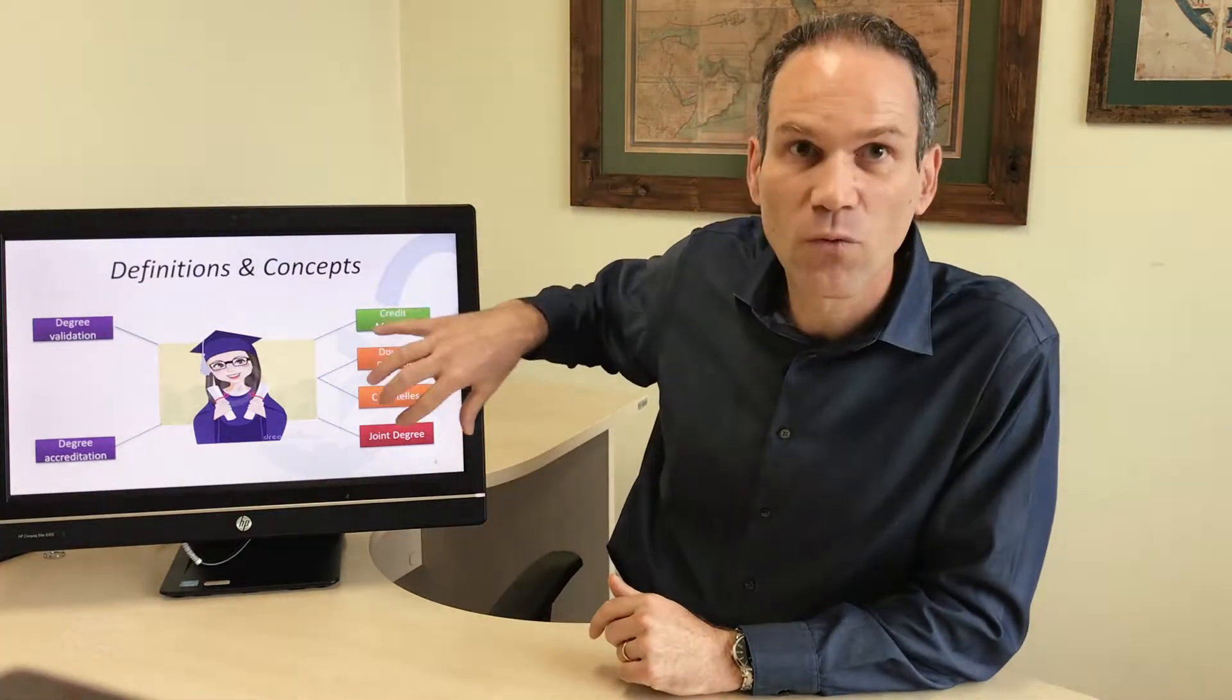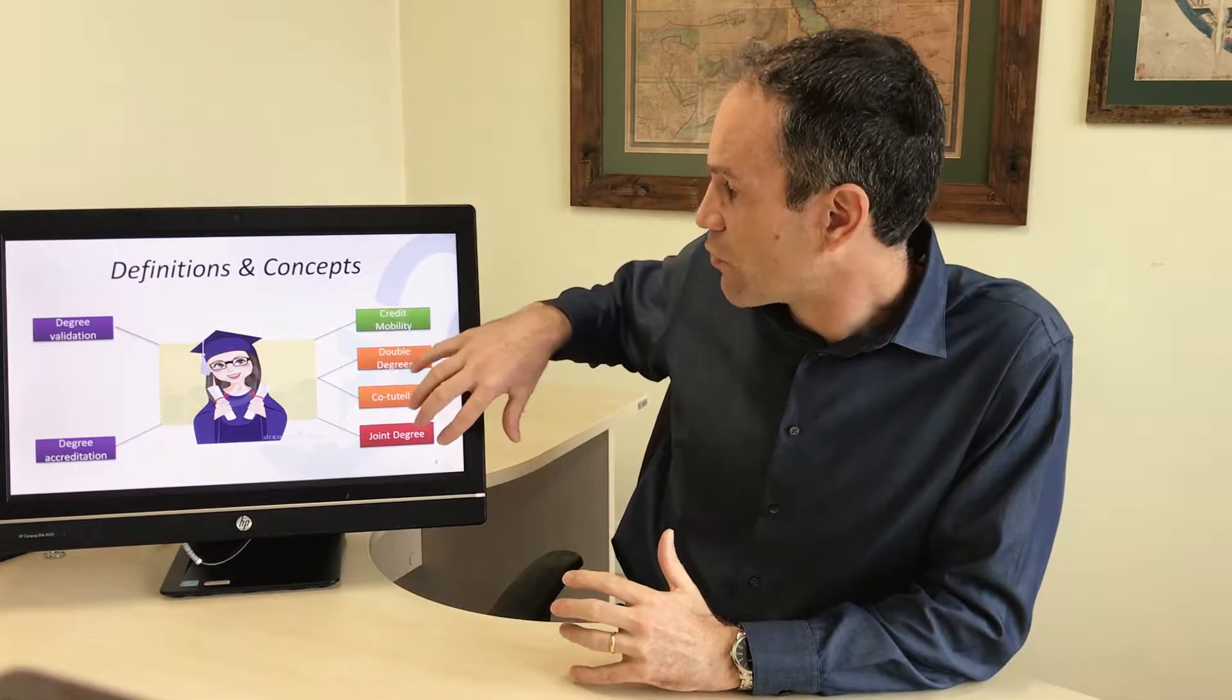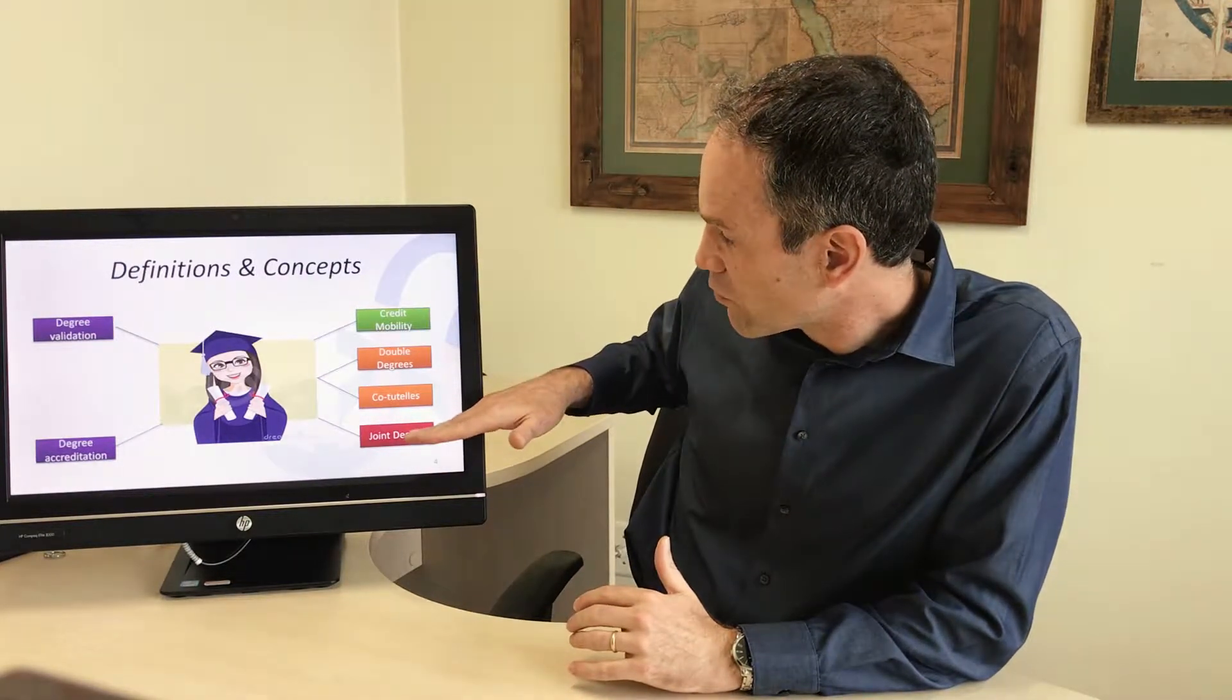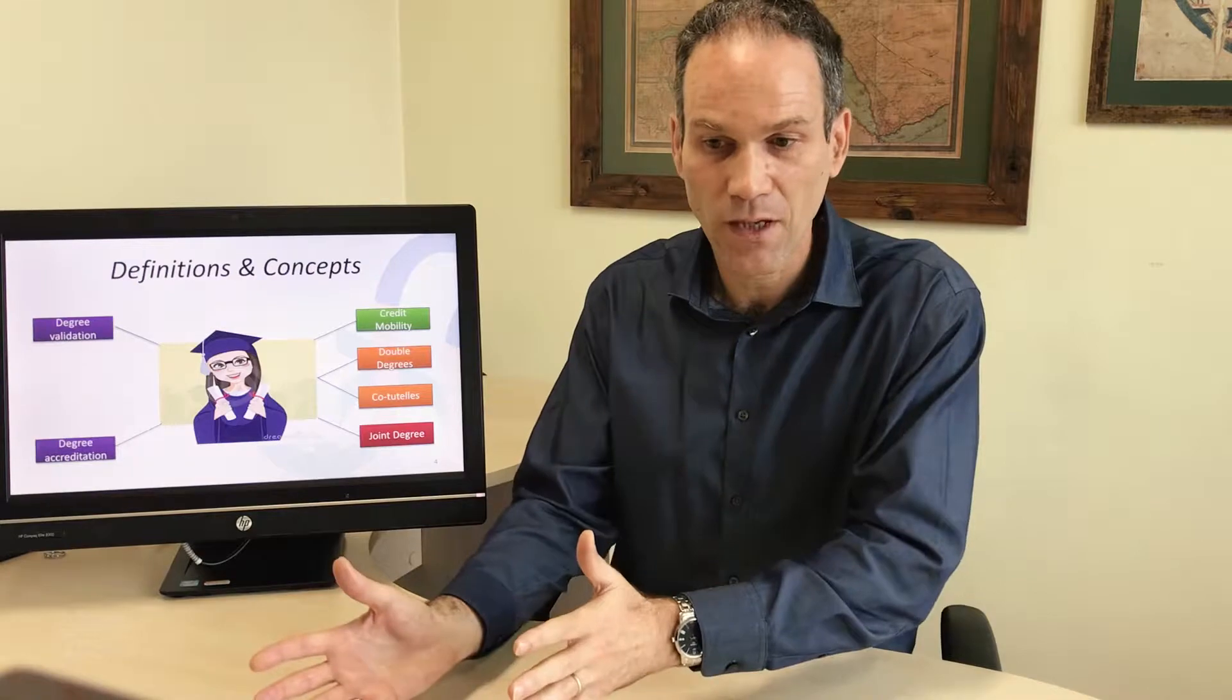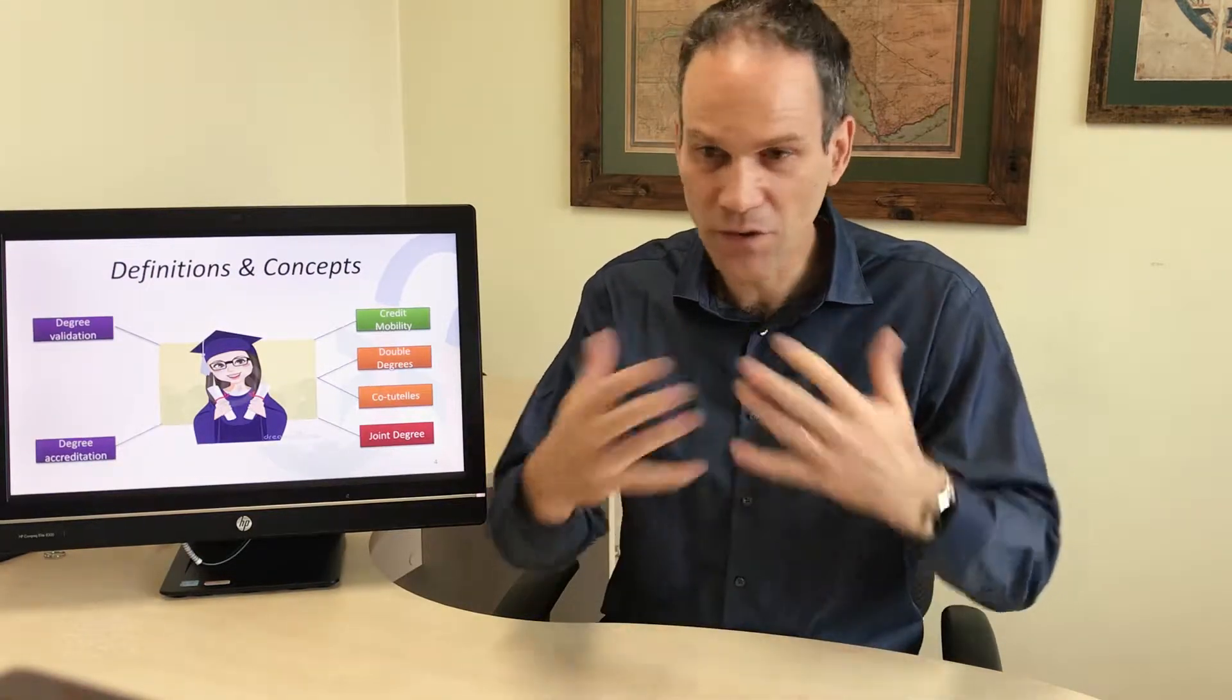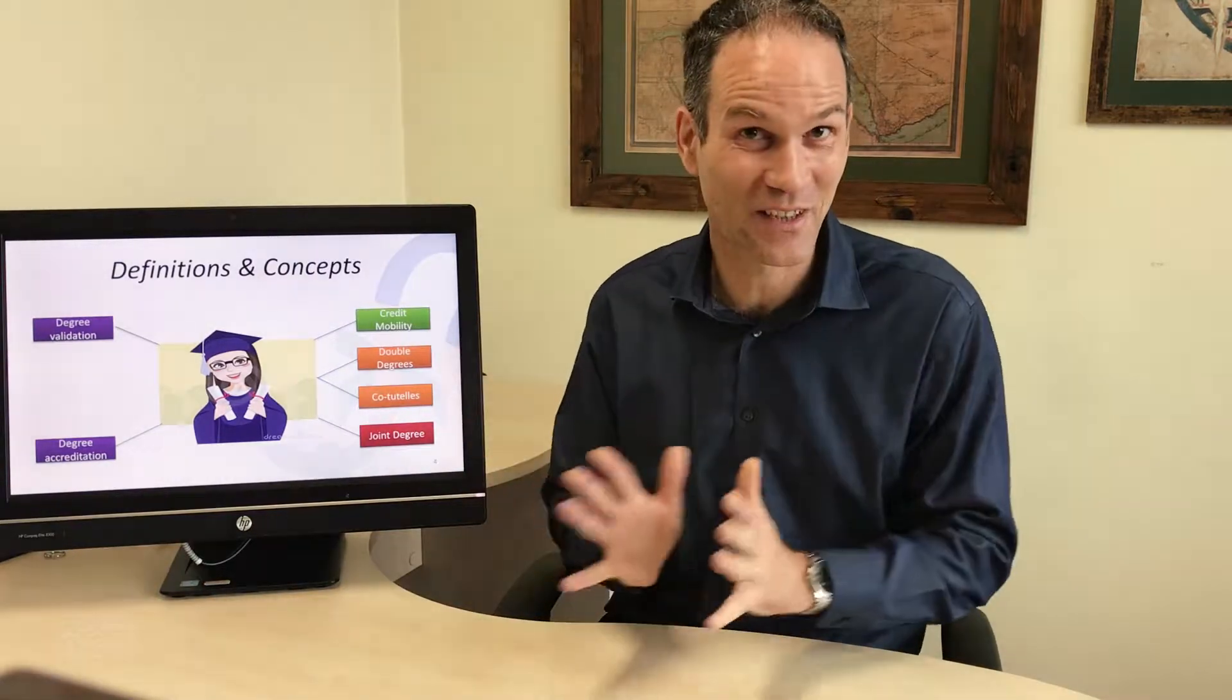On the other hand, you have what has to do with today's topic: double degrees. It starts with credit mobility and on the other end of the spectrum, joint degrees. Credit mobility is what everybody is doing. Students go abroad, they study something, and when they come back they need to revalidate the credits. There are a lot of difficulties involved in this. It's a very important subject, but it's not the topic of today either.